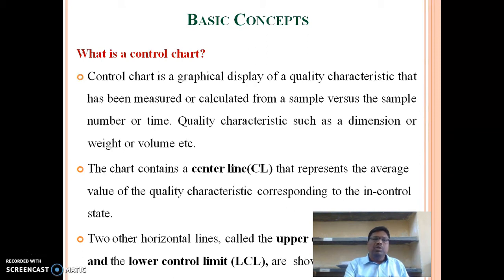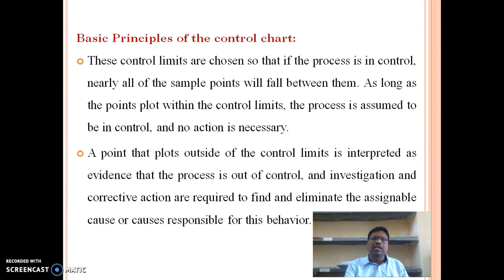There are two other horizontal lines: the upper control limit (UCL) and the lower control limit (LCL), shown on the chart.